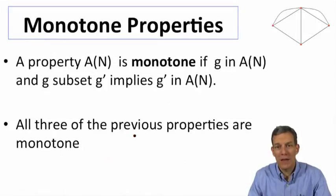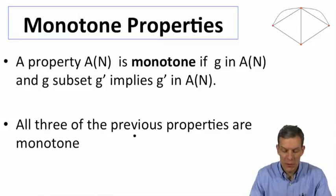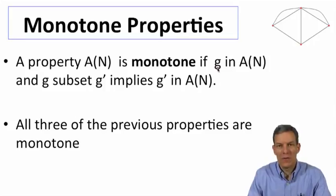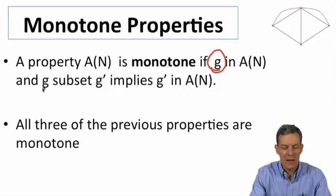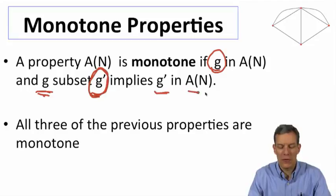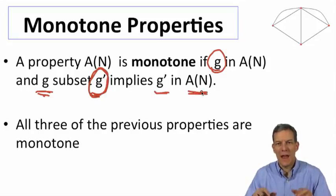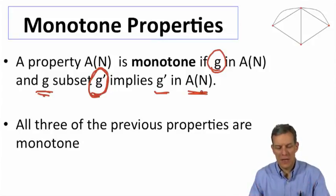Now an important class of properties are what is known as monotone properties. And so what is a monotone property? A monotone property is one such that if some network satisfies that property and we add extra links, so we just increase the links in the network so that G is a subset of the links in G prime, then G prime also satisfies the property. So it just means adding extra things keeps us satisfying the property.